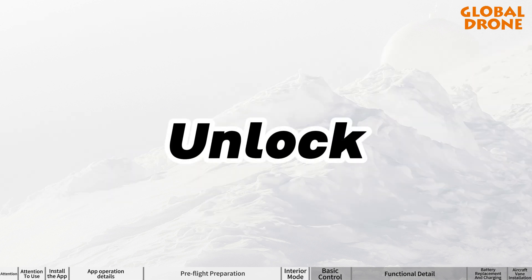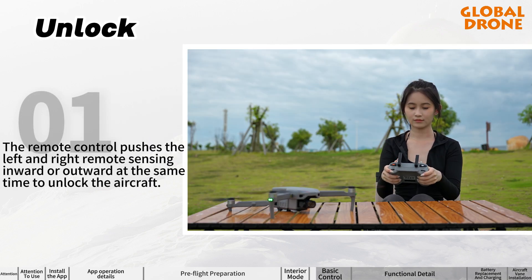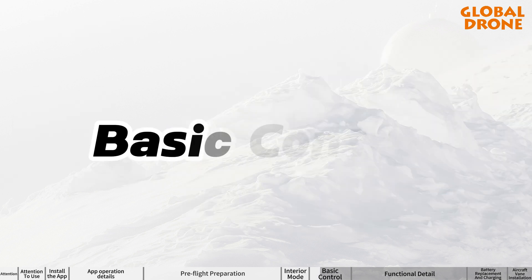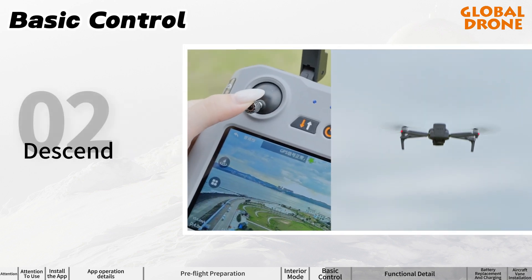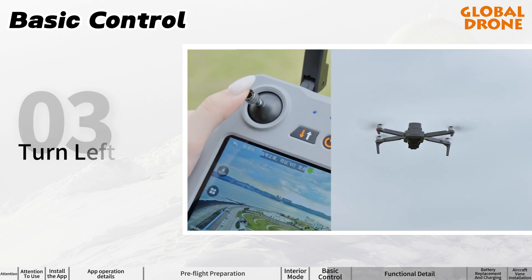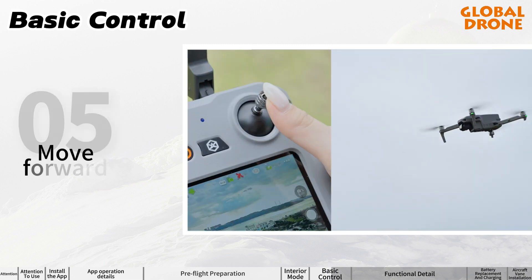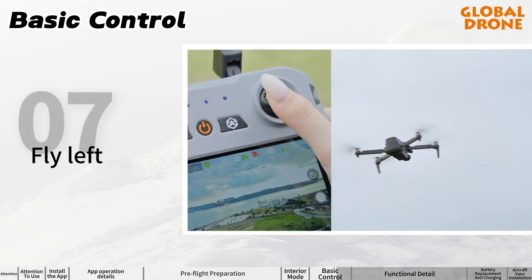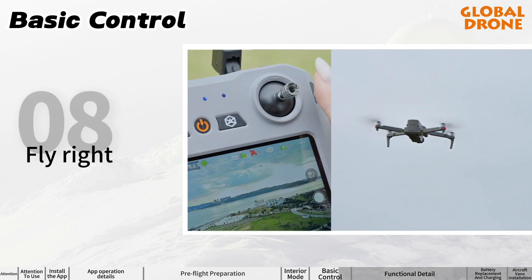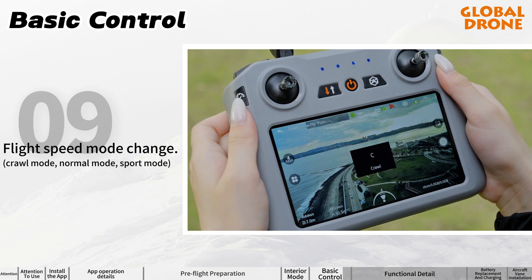Unlock: push the left and right remote sensing sticks inward or outward at the same time to unlock the aircraft. Basic controls: ascend, descend, turn left, turn right, move forward, backward, fly left, fly right. Flight speed modes: crawl mode, normal mode, and sport mode.